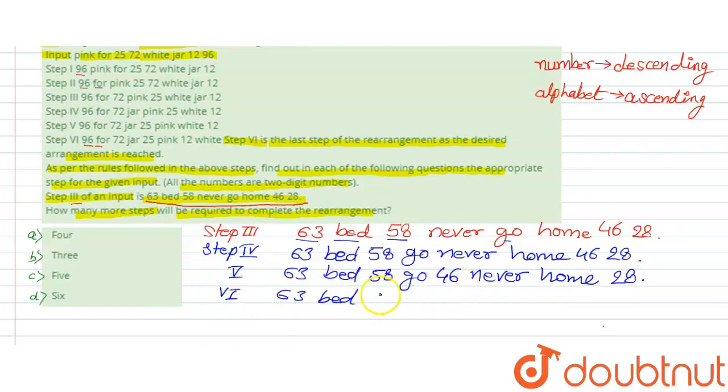In step 6, the next number 46 is placed on the left, and never and home are arranged alphabetically. Then we have 46 home with 28 and never.